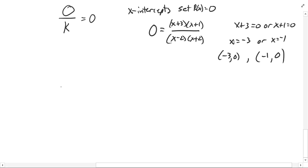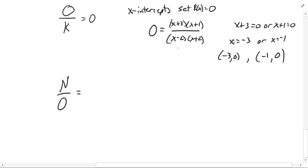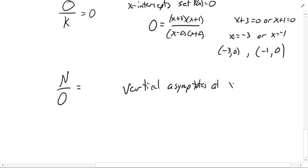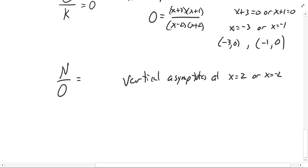The other thing: what happens when the bottom is 0? You're not allowed to divide by 0, and what happens when you're dividing by 0 is you end up with vertical asymptotes. Where this denominator equals 0, we get vertical asymptotes — at x equals 2 or x equals negative 2.